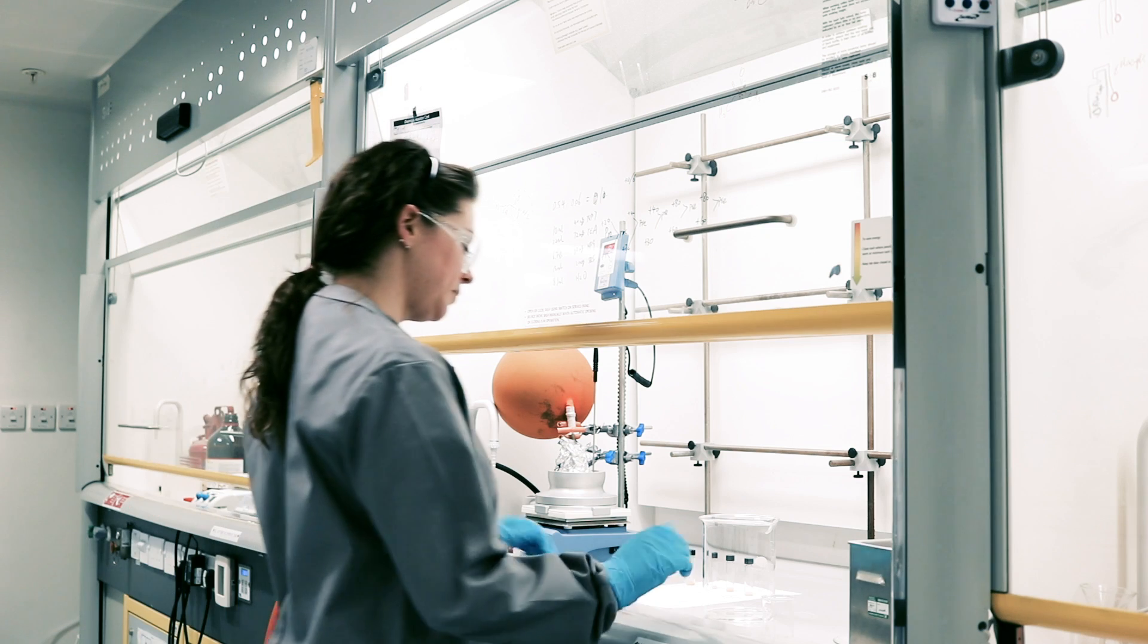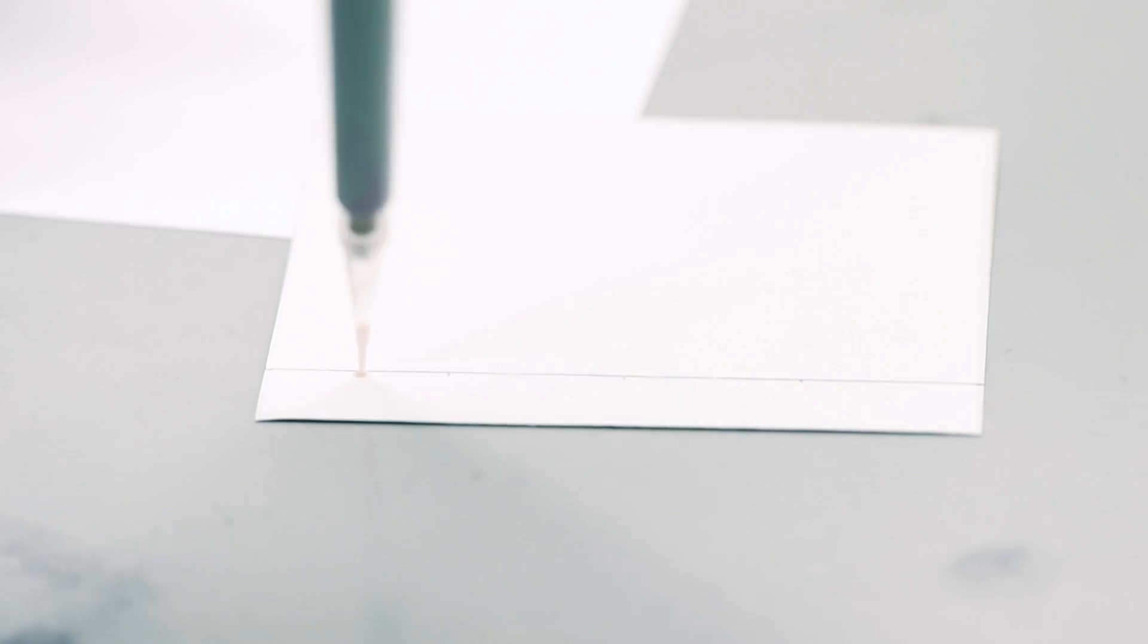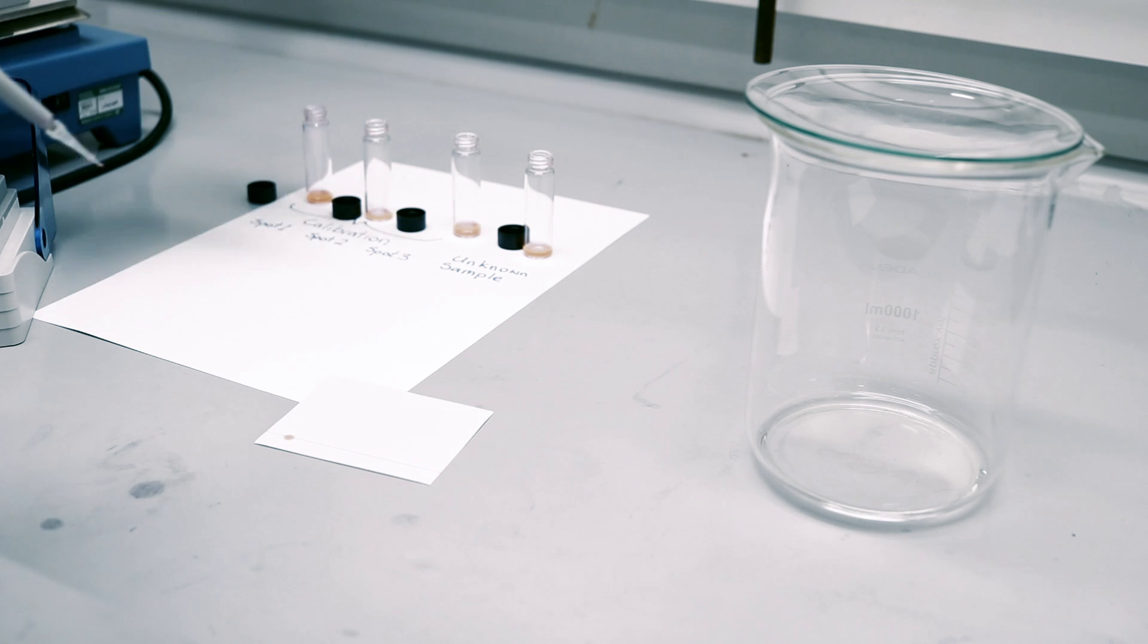You need to prepare a TLC plate by spotting a small but defined quantity of liquid a short distance from the bottom of the plate.